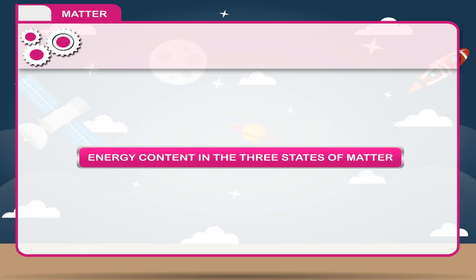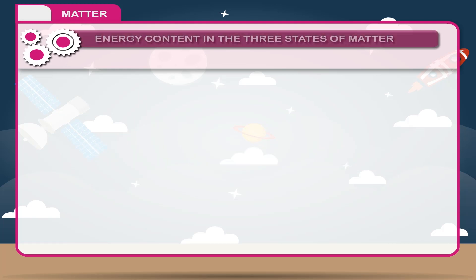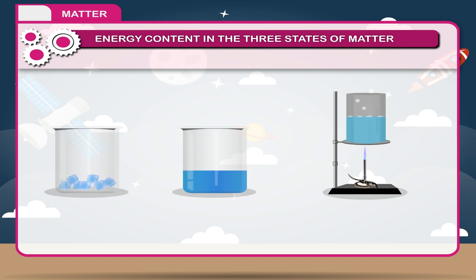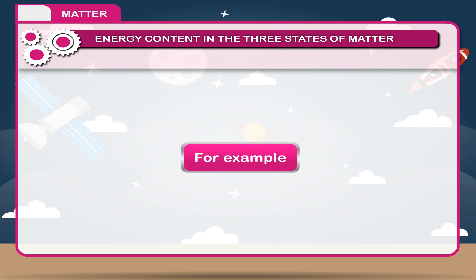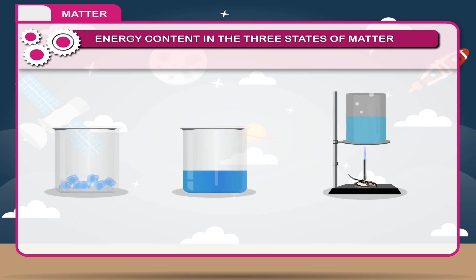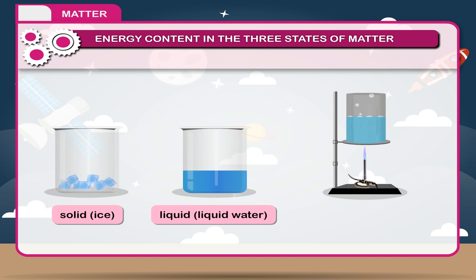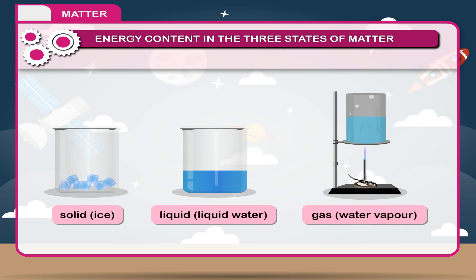Energy content in the three states of matter. Many substances can exist as more than one state. For example, water can exist as a solid — ice — a liquid — liquid water — and a gas — water vapor. The difference between these states is the amount of energy.